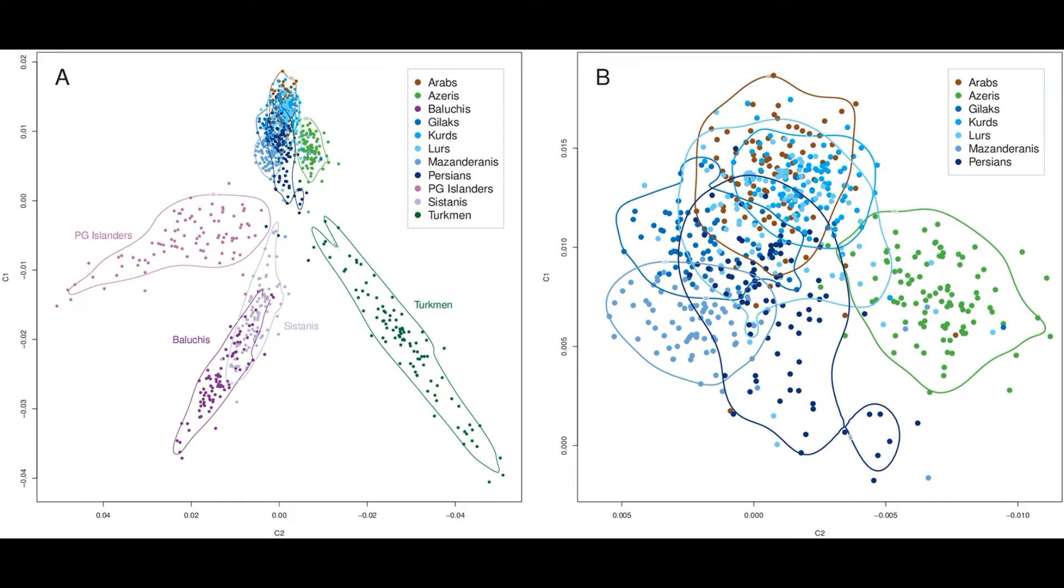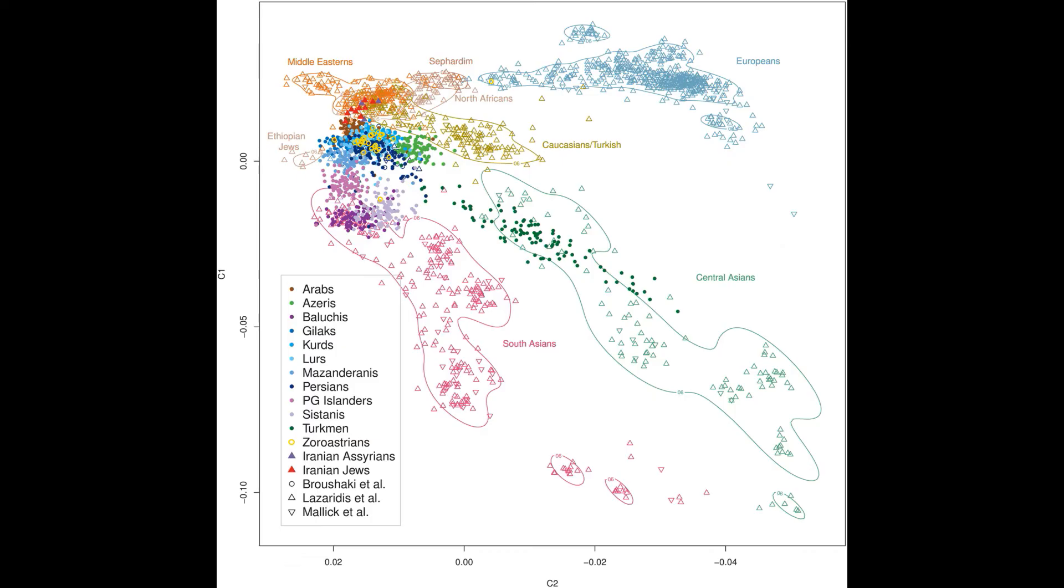This is another PCA and this PCA shows the dynamic diversity between these groups. You can clearly see that the Arabs cluster within the range of other Iranian groups. You can see the Arabs are here in brown and they cluster in the vicinity of the other Iranian groups including the Zoroastrians, the Kurds, the Lurs, Mazandaranis and Gilaks.